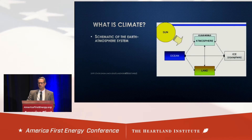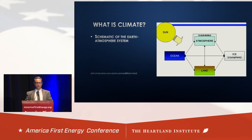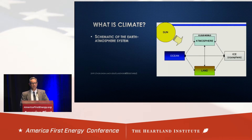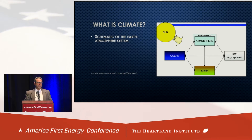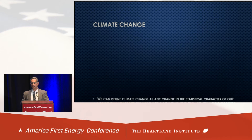The earth-atmosphere system is a composite system composed of the atmosphere, oceans, land, and ice-covered regions of the world. We basically know how the internal dynamics of the oceans, atmosphere, and even the ice sphere work, but where we're unclear is how these things interact with each other. The Sun is the ultimate energy input into this system.